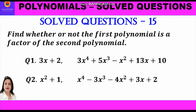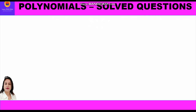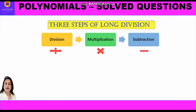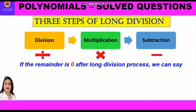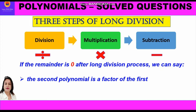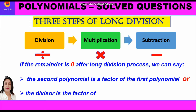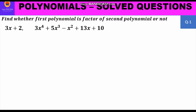These are the two questions which we are going to solve using the long division method. Long division of polynomials is the same as long division of any whole number. The three steps involved are: first, division; second, multiplication; and third, subtraction. If the remainder is zero after the long division process, we can say the divisor is a factor of the dividend.